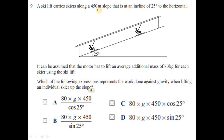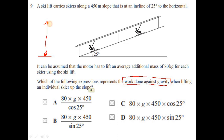Question nine: a ski lift carries skiers along a 450-metre slope inclined at 25 degrees to the horizontal. Assume the motor lifts an average additional mass of 80 kg per skier. Which expression represents the work done against gravity when lifting an individual skier? Work done against gravity equals the gravitational potential energy gained, so we need the vertical height gained.